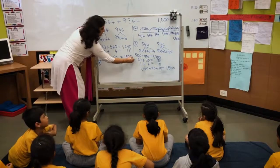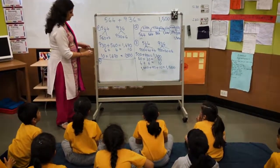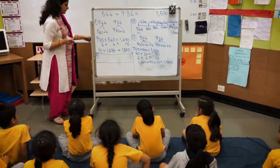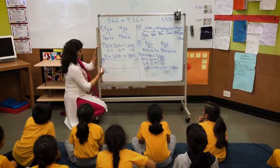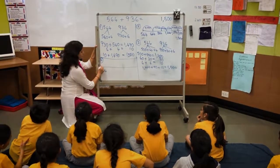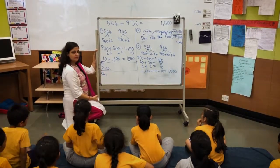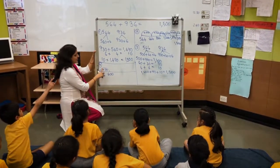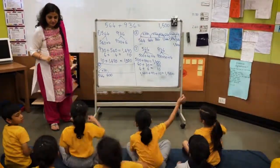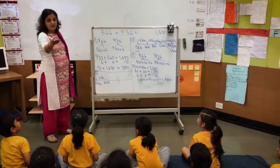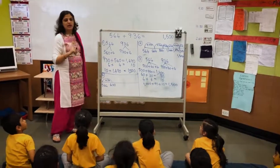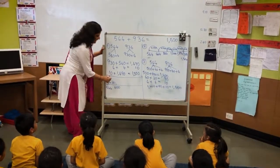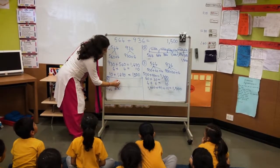Mine is like... I went on the number line. I started from five hundred and sixty-four, and then I went thirty-six steps forward and reached six hundred. Can someone tell me why he added thirty-six first? So then he gets a friendly number. And how is it going to help him? So then he goes directly to nine hundred because the thirty-six is already accounted for at six hundred. Exactly. And then I directly added nine hundred, and got one thousand five hundred.